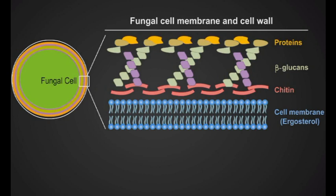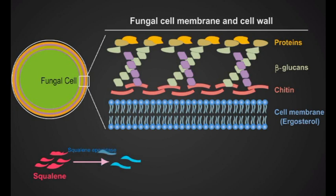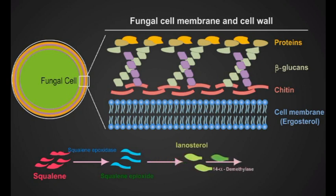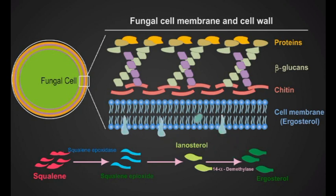The first step of fungal cell membrane synthesis is the conversion of squalene molecules by the enzyme squalene epoxidase into squalene epoxide. Squalene epoxide is converted to lanosterol, which is demethylated by 14-alpha demethylase into ergosterol. Finally, the ergosterol is inserted into the fungal cell wall.